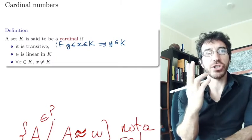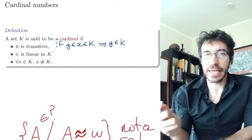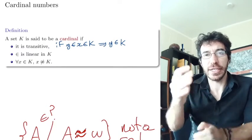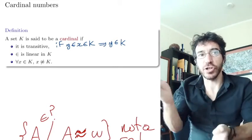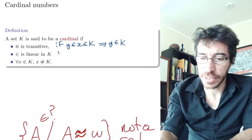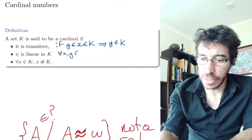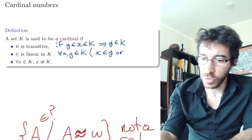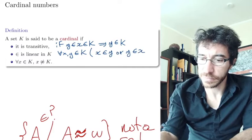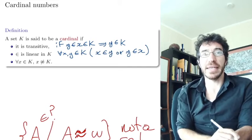Second property: epsilon is linear in K. Linear means it's a linear ordering. Linear ordering means that it's not a partial ordering, but it's a line. So all the elements are connected. So for every X and Y in K, either X belongs to Y or Y belongs to X.